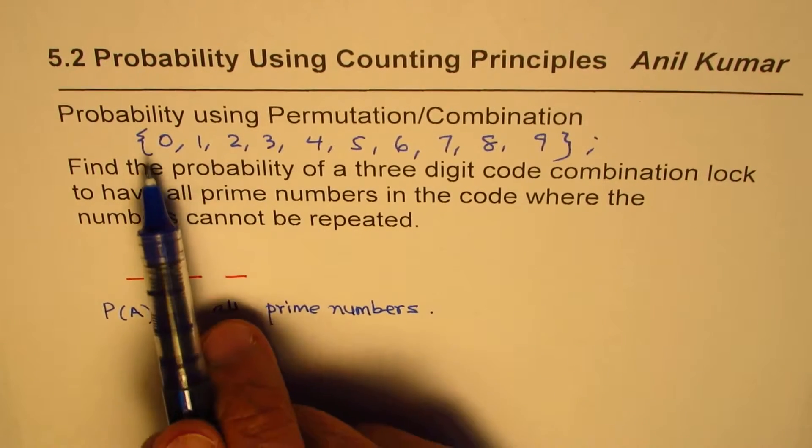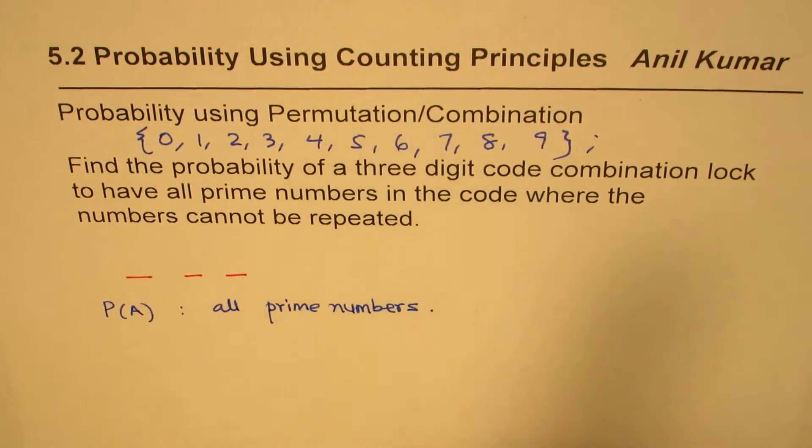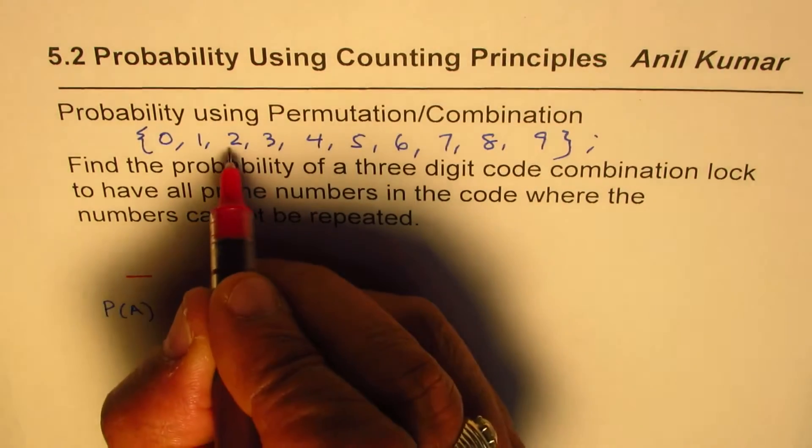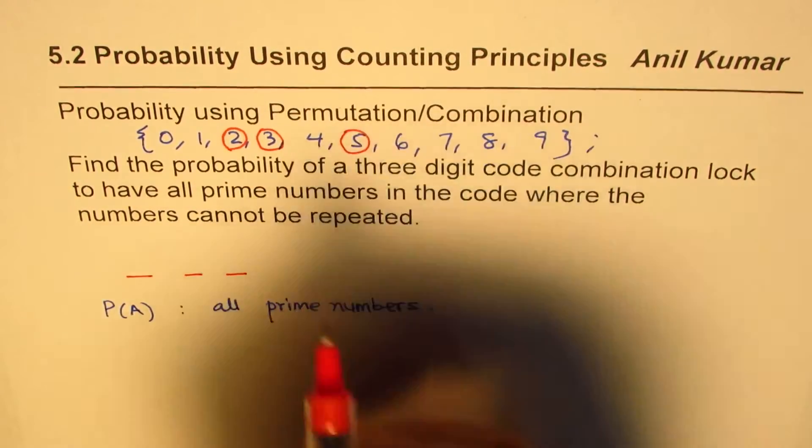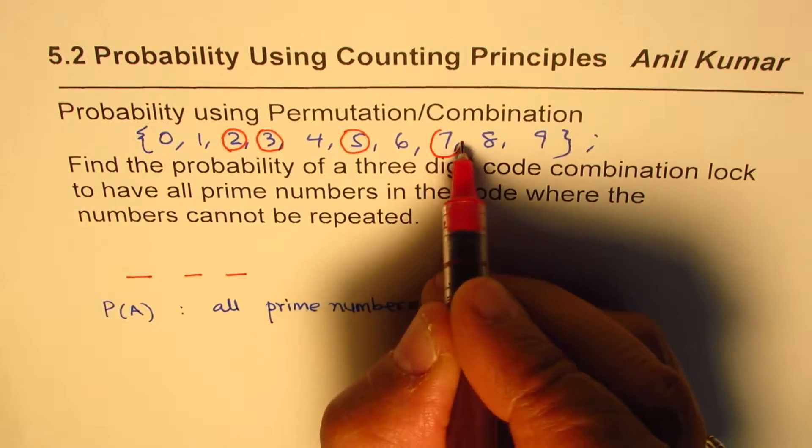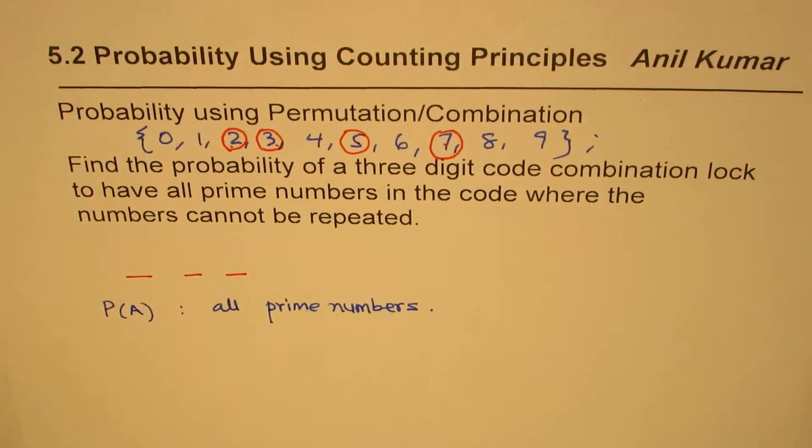Now, how many prime numbers do we have from numbers 0 to 9? Let's circle them. So 2 is a prime number, 3 is a prime number, 5 is a prime number, 7 is a prime number. So we have 1, 2, 3, 4 prime numbers.